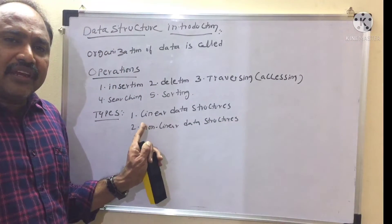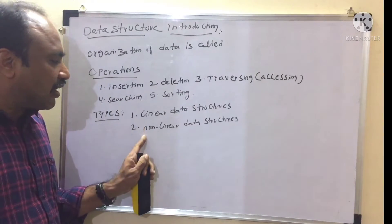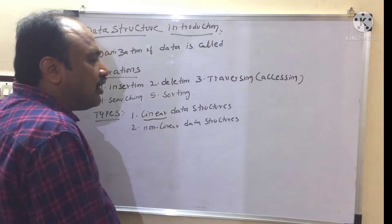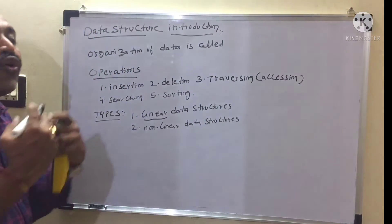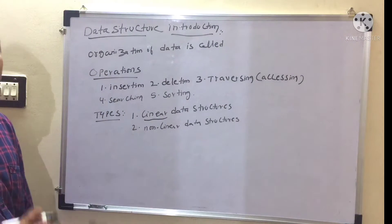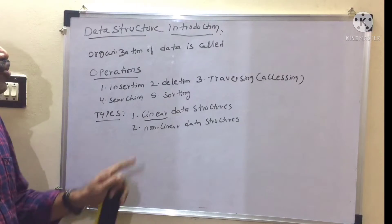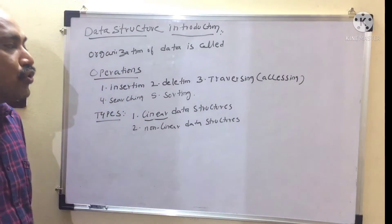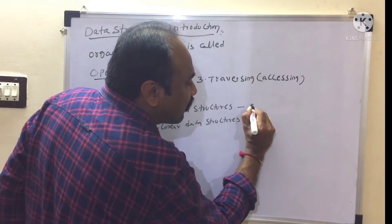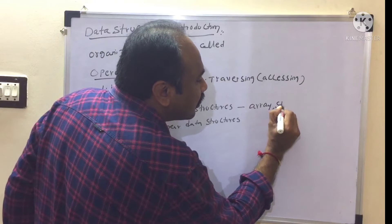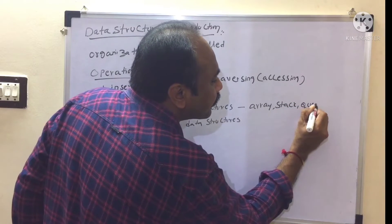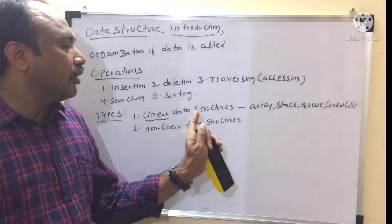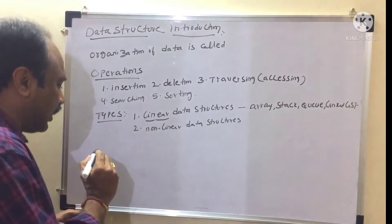What is the meaning of linear? Sequential. What is the meaning of non-linear? Non-sequential. If we have to call a data structure as linear, when we are going to store data and access data in a linear manner — in a sequential manner — those data structures are referred to as linear data structures. The examples of linear data structures are array, stack, queue, and linked list.